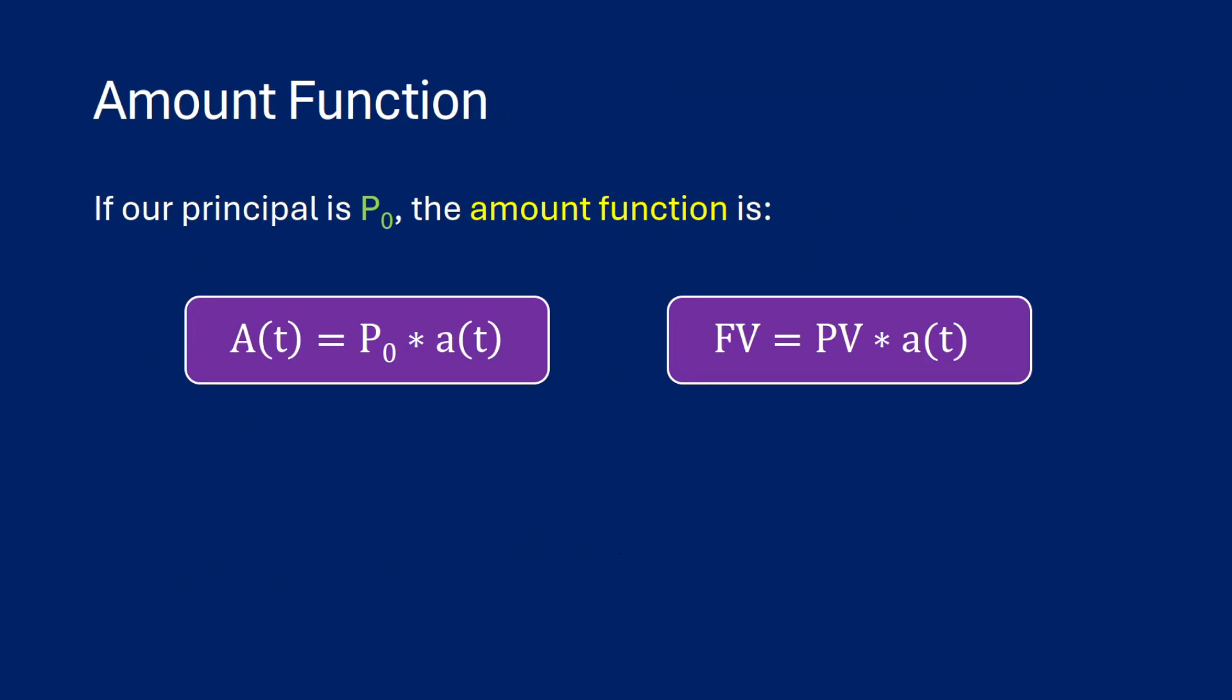Now, our amount function is basically going to be our accumulation function scaled by our principal, in other words, our initial deposit. So the amount at time t is going to be our initial investment times the accumulation function. So accumulation function always starts with a $1 deposit. So this is basically going to be scaling your deposit up.